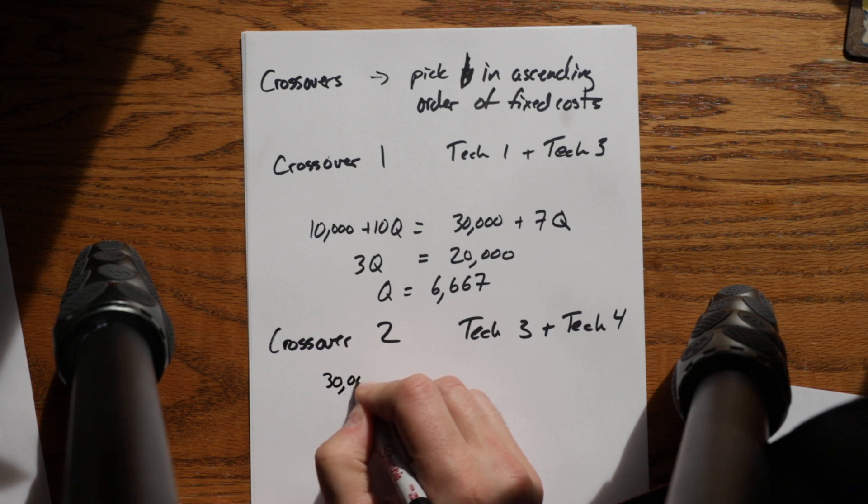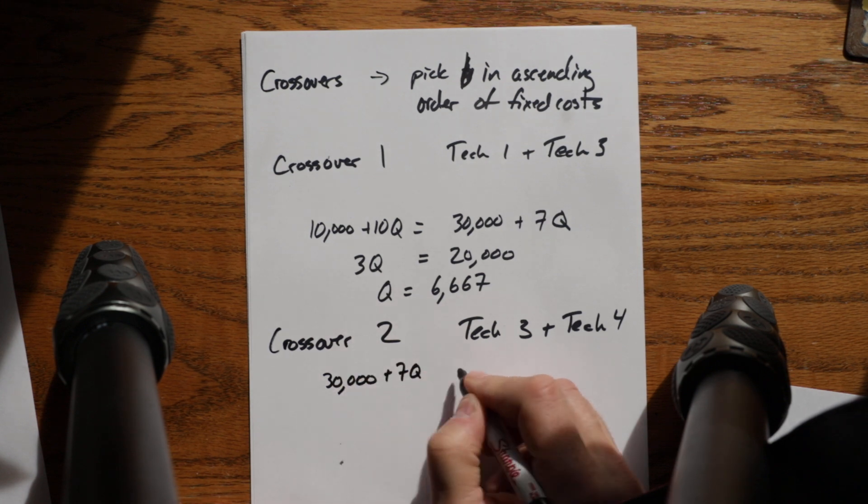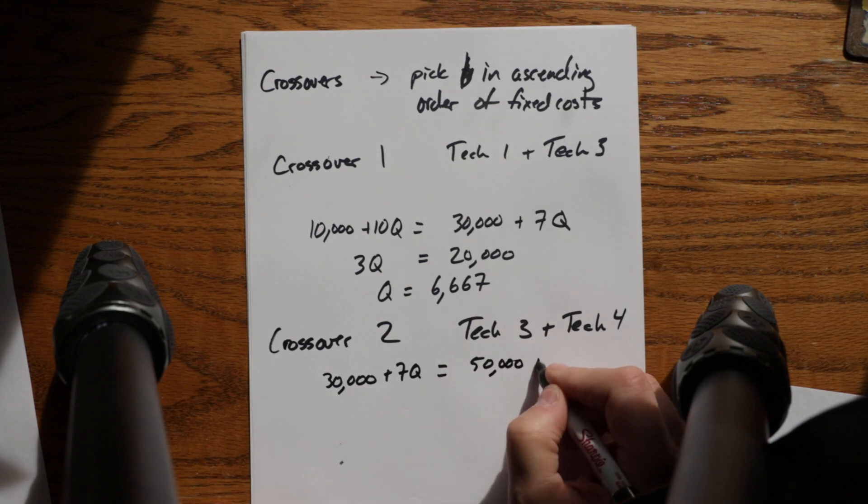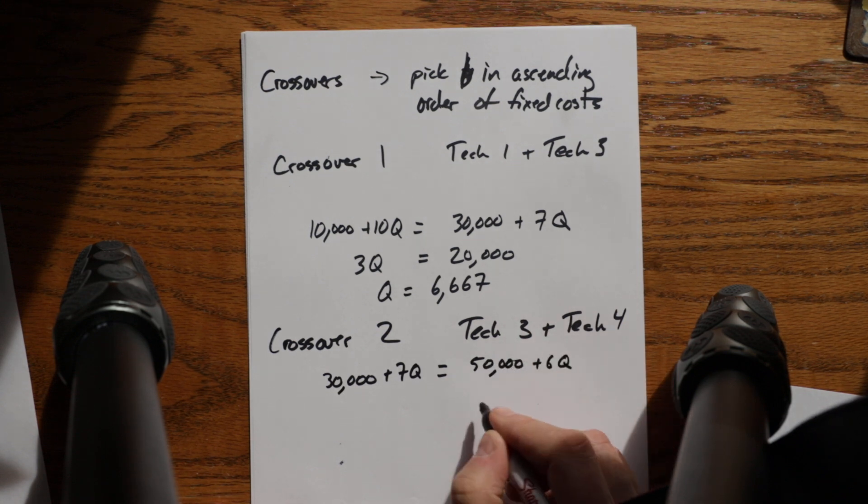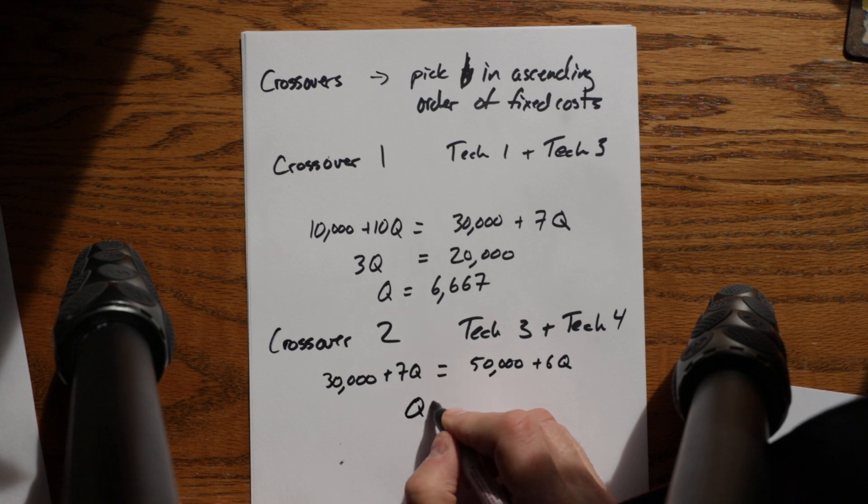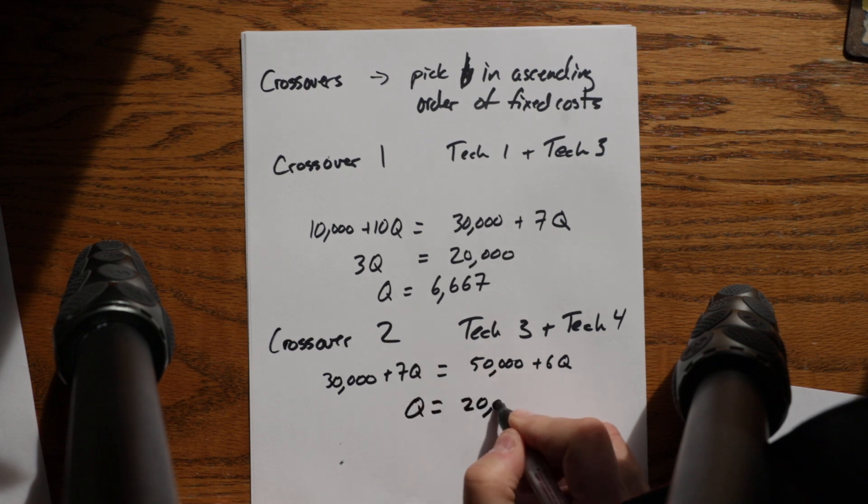So then I get $30,000 plus $7Q equals $50,000 fixed cost plus variable cost times Q. Crossover point is the point at which the volume of the quantity that they're the same. And in this case, Q is equal to 20,000.